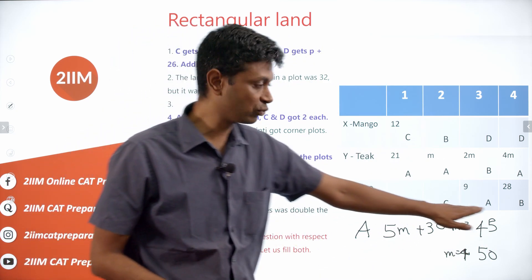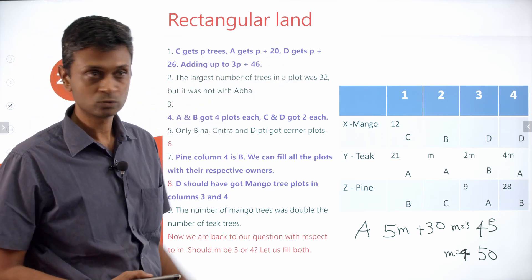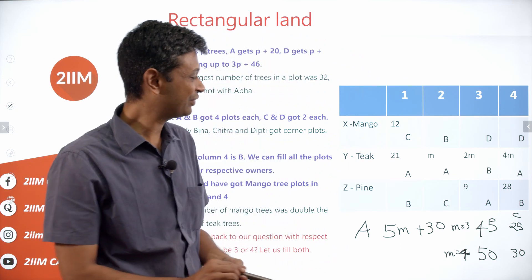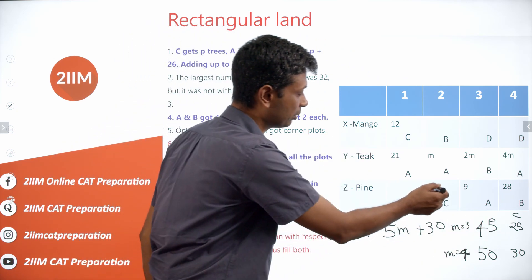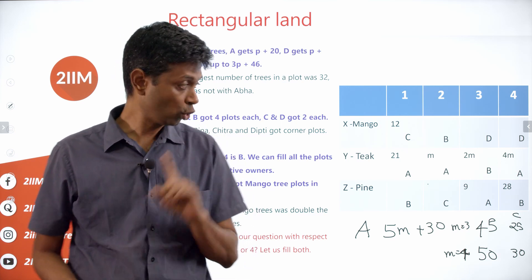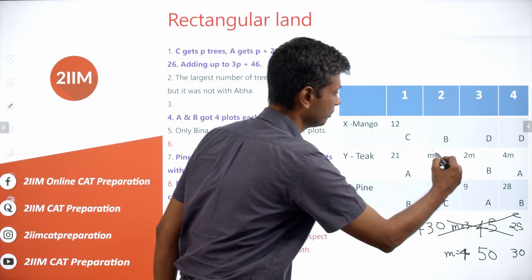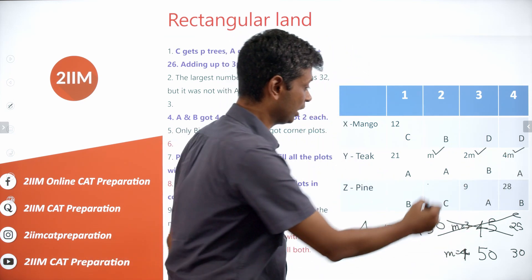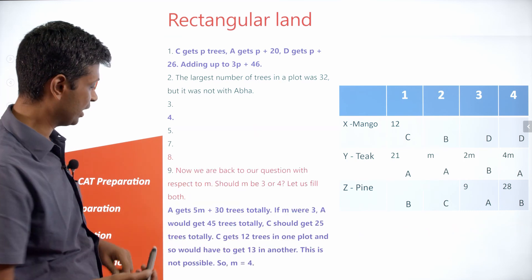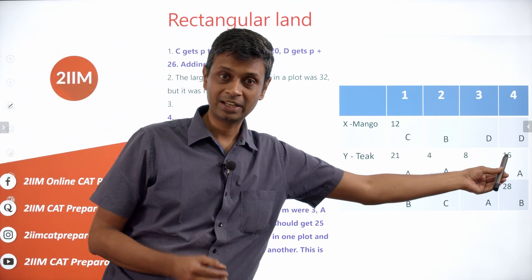Since Chitra gets P and Ava gets P plus 20: if Ava totals 45, Chitra totals 25. Chitra already has 12 trees in one plot, so the other would need to be 13 — but 13 is neither a multiple of 3 nor 4. So M equals 3 is eliminated. M must equal 4, giving Ava a total of 50.